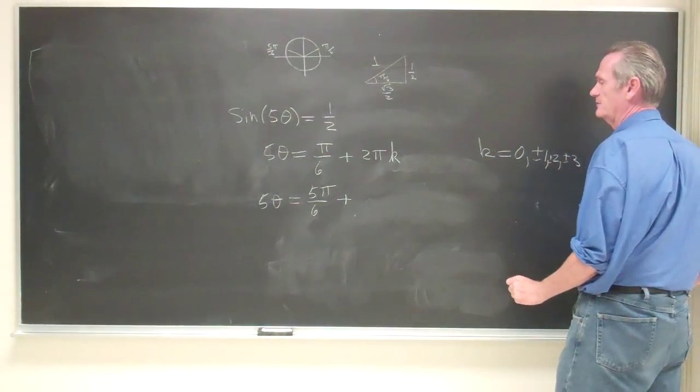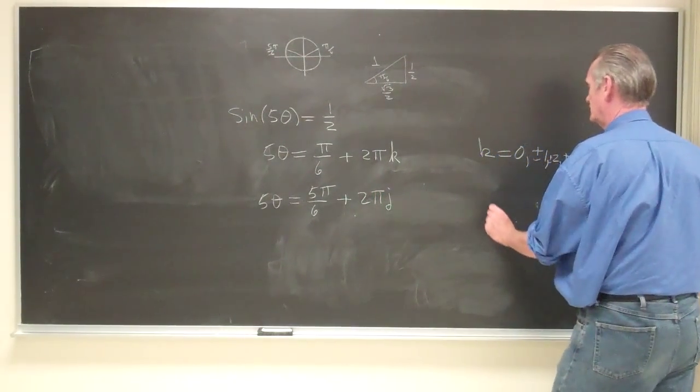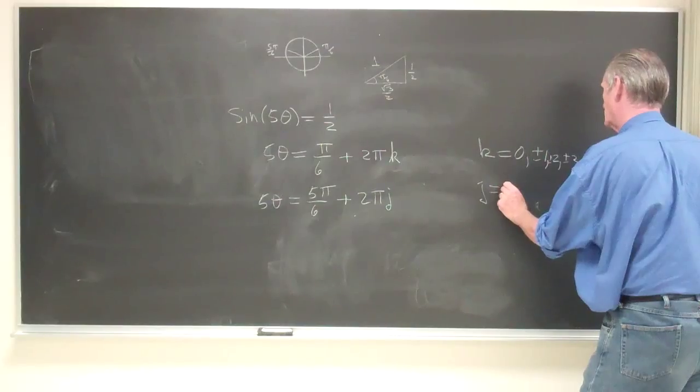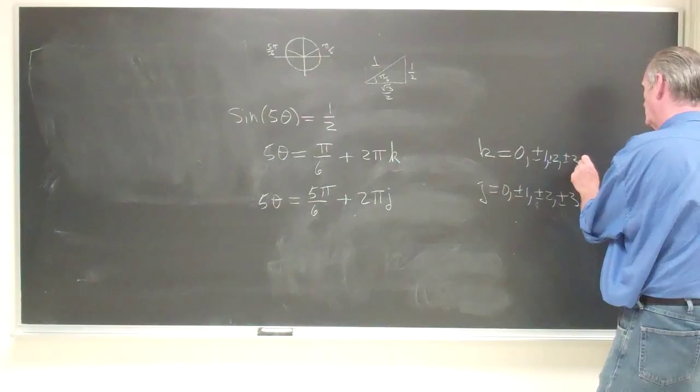And similarly, 5 theta is going to be 5 pi over 6 plus 2... I'm going to use j here, so j is equal to 0 plus or minus 1 plus or minus 2 plus or minus 3 and so forth.